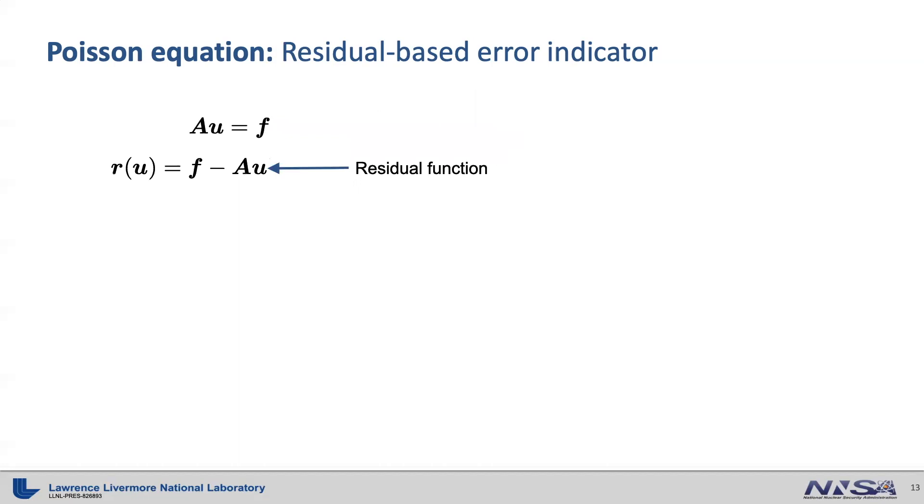Using this, we can define a residual function R sub U equals F minus AU. If we plug the full model solution U into this residual function, then we get zero residual theoretically. On the other hand, if we plug the reduced order model solution to this residual function, we would not get zero residual because the reduced order model solution is approximate.